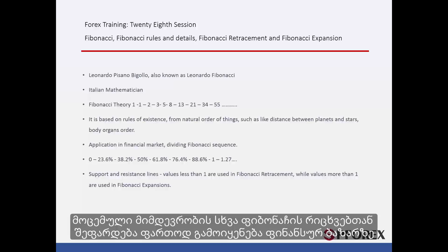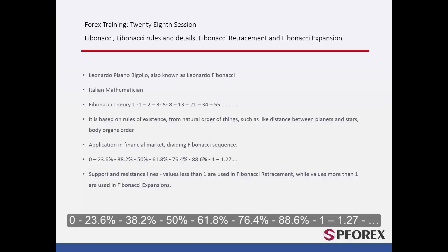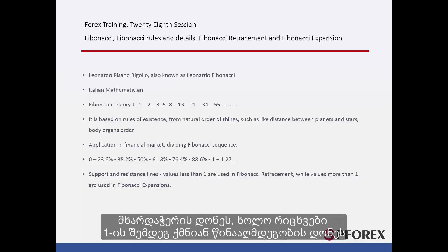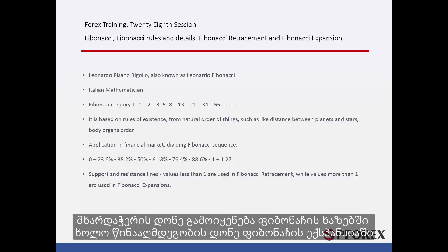The result of a given Fibonacci number divided by another Fibonacci number is used considerably in financial markets. The key sequence is 0, 23.6%, 38.2%, 50%, 61.8%, 76.4%, 88.6%, 1, and 1.27. Numbers between 0 and 1 can be represented as percentages which develop supportive levels, while numbers above 1 create resistance levels. Supportive levels are used in Fibonacci Retracement, while resistance levels are used in Fibonacci Expansion.